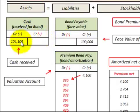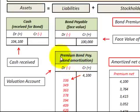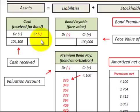We've got assets of $104,100 cash on the asset side of the equation, and then $100,000 as a liability. We have to balance those out, and we do that with this valuation account — the premium on bonds payable. The balancing entry is $4,100, so once we add the $4,100 to the $100,000 payable account, the equation balances: assets equal $104,000.